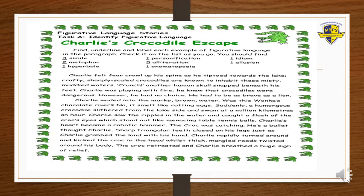Now, students, in this paragraph you will look for two metaphors. The first metaphor is 'he is a bullet.' The writer is directly comparing the crocodile to a bullet without using the words 'as' or 'like.' The second metaphor is 'Charlie's heart became a robotic hammer.' The writer is comparing Charlie's heart to a robotic hammer, without using 'as' or 'like,' to show how fast his heart was beating. Now we have finished with similes and metaphors.